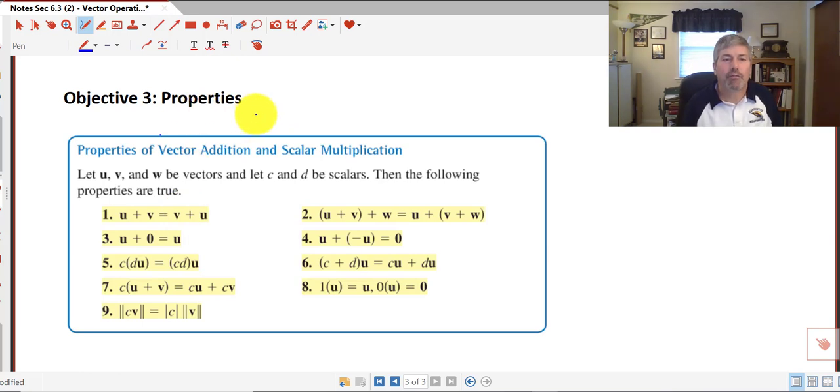And in objective 3, we've got some properties of vector addition and scalar multiplication. Number 1, u plus v equals v plus u. It appears that vector addition is commutative. And in property 2, we also have essentially an associative property of addition, where if we group u plus v plus w, that's going to give us the same result as u plus v plus w. So our order stayed the same, but we regrouped, so that's our associative property.